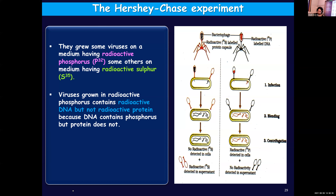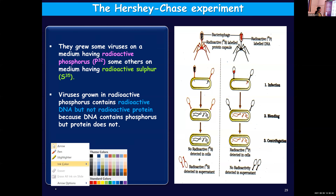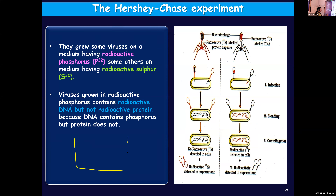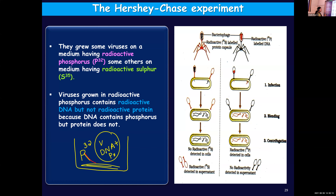These viruses were grown in a medium containing radioactive phosphorus. They had DNA plus proteins, and as they are surviving in this medium, they take up this phosphorus. But this phosphorus will be incorporated only into DNA, not into the proteins, because phosphorus is not a constituent of protein — it is a constituent only of DNA. Thereby the DNA became radioactive, but protein remained non-radioactive.